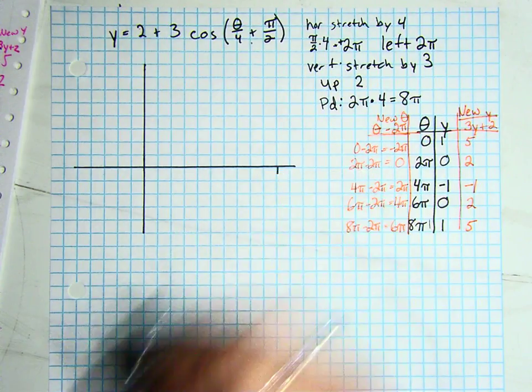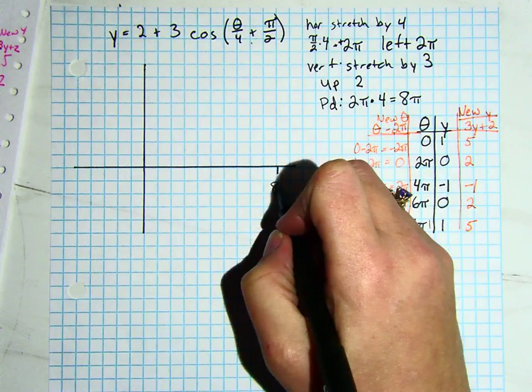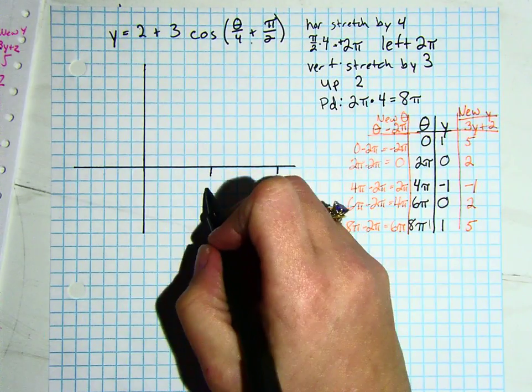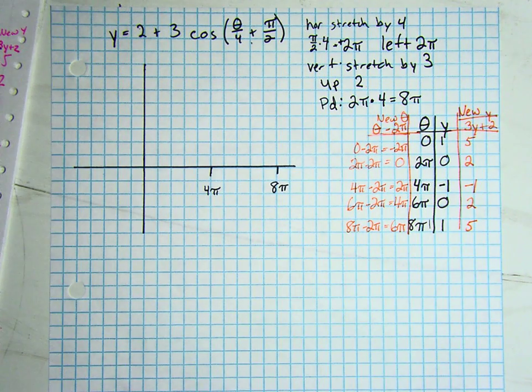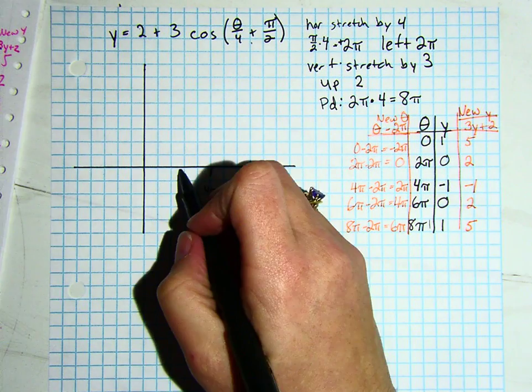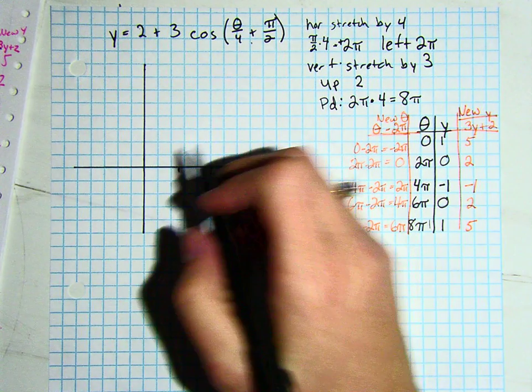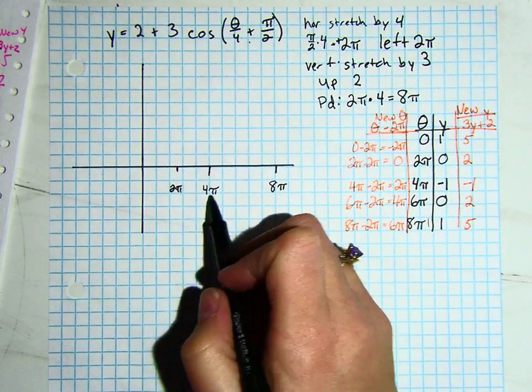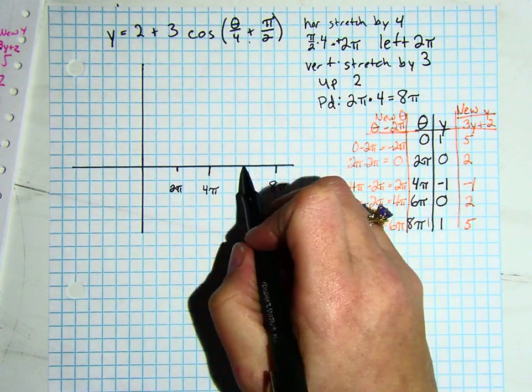I'm going to start here. I'm going to call that 8 pi. I am going to cut that in half. So this is going to be 4 pi. I'm again going to cut that in half. And this is going to be 2 pi. So now I have 0, 2 pi, 4 pi, and this is going to be 6 pi.